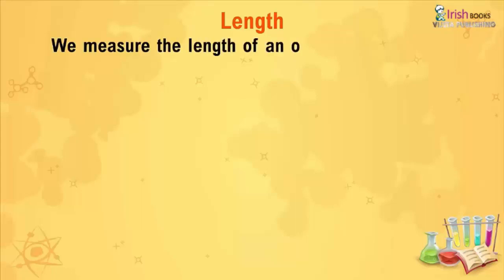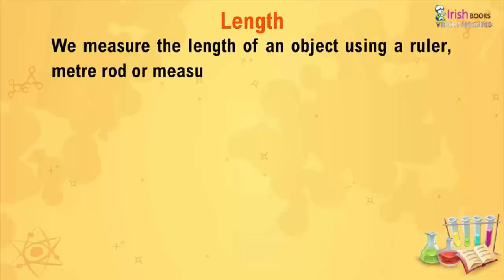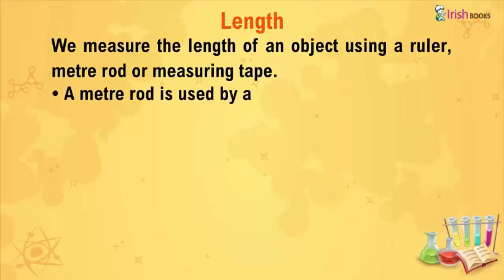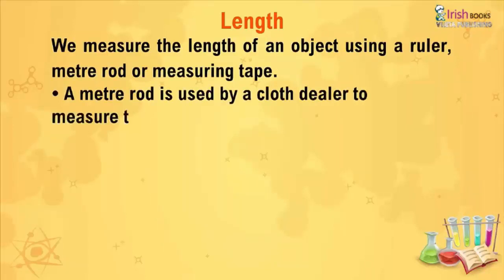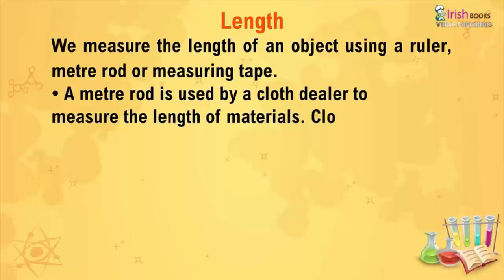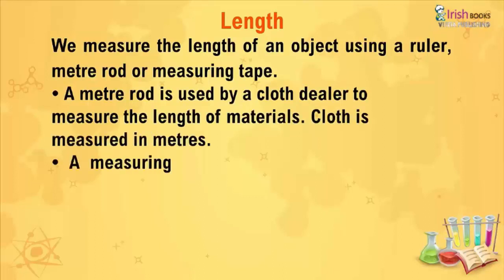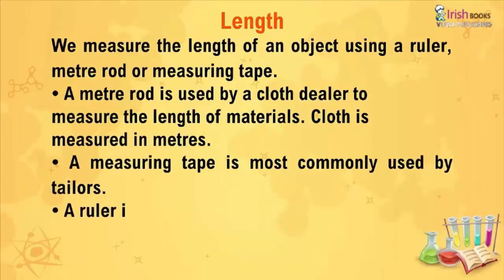A meter rod is used by a cloth dealer to measure the length of materials. Cloth is measured in meters. A measuring tape is most commonly used by tailors. A ruler is used to measure small lengths.